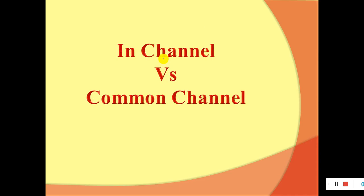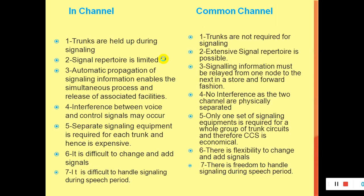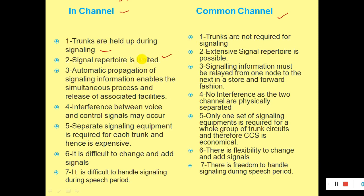Now the difference between in-channel versus common channel signaling. In in-channel signaling, trunks are held up during signaling because speech and control signals are sent on the same channel. In CCS, trunks are not required for signaling. In in-channel, signal reporting is limited — signal variation may be limited because signals are sent along with speech. In CCS, there may be more combinations or facilities to send control signals. In in-channel, there is automatic propagation of signal information with simultaneous processing and release of associated facilities.